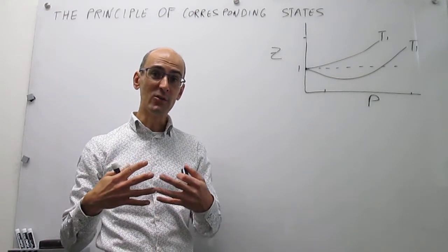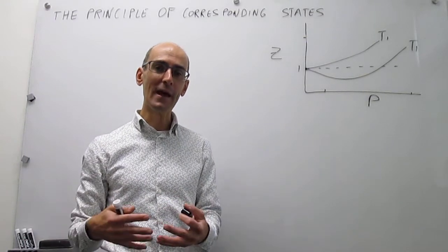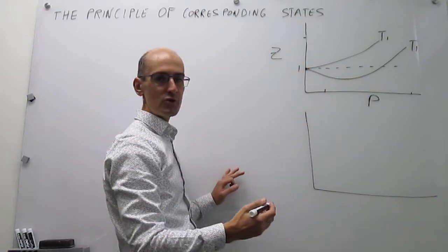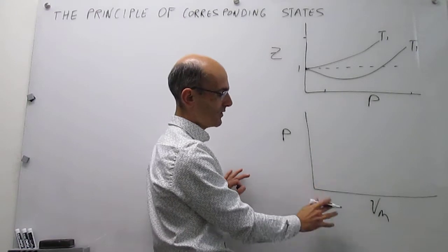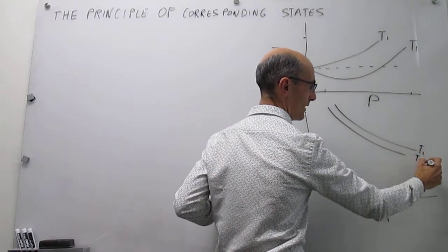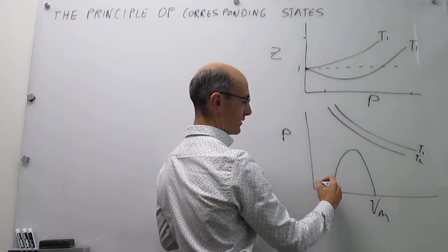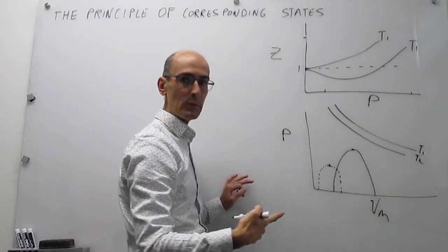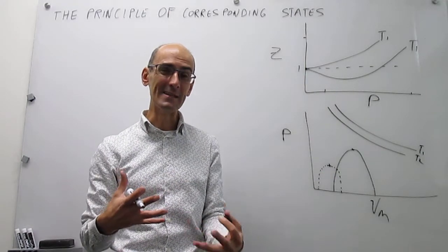Another way to see that gas particles interact differently in different gases is that different gases have different critical points — they have different ways to condense. If we plot two condensation isotherms for two different gases, showing pressure versus molar volume, we see ideal gas behavior at temperatures T1 and T2, but each gas has a different condensation region. The critical point of the first gas and the critical point of the second gas are different, which again reflects that gas particles interact differently in various gases.